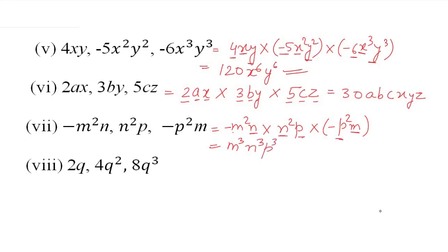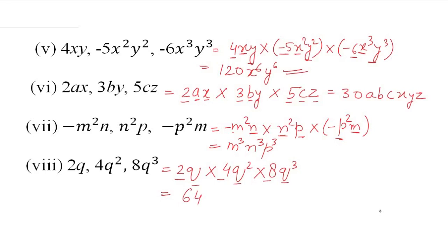Last part: 2q × 4q² × 8q³. Numbers: 2 × 4 = 8, 8 × 8 = 64. Variables: q × q² × q³ = q⁶. So answer है 64q⁶. इस तरह हम monomial को monomial से multiply करते हैं।